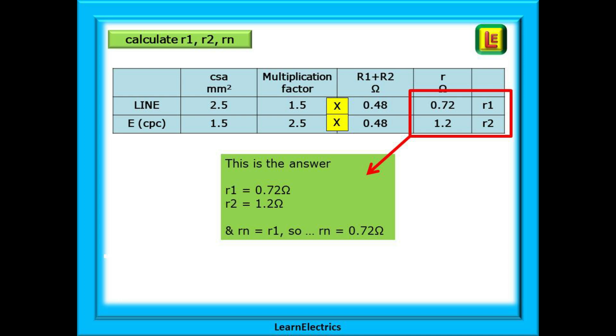Little R1 is 0.72 ohms, and little R2 is 1.2 ohms. And little Rn, the neutral, is the same as little R1, so this is 0.72 ohms as well.